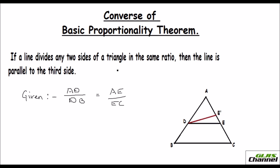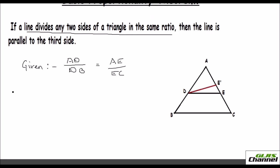The line divides the sides in the same ratio — that is given — and you need to prove that the line is parallel to the third side. To prove: line DE is parallel to the third side BC.